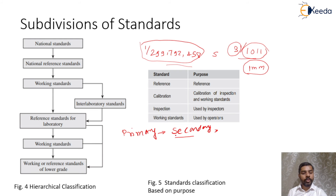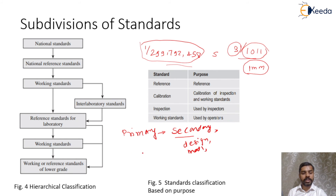Secondary standards very closely resemble primary standards in terms of design, material, and length. The errors existing in the bars are recorded by comparing with the primary standards over a very long interval of time. These are kept under very strict supervision and are compared with tertiary standards only when absolutely necessary, to safeguard the primary and secondary standards.